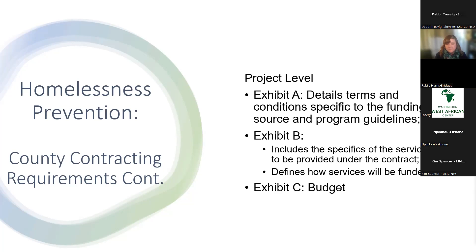The project-level contract has several sections. Exhibit A contains the details of the terms and conditions for the funding source. For this contract, it includes all the requirements from the Department of Commerce that they include in our grant agreement with them — we pass those on to you as a subcontractor. Exhibit A is approved by our prosecuting attorney as to form with the grant agreement we have with the state. We don't historically make changes to Exhibit A — it's based on the grant agreement requirements.